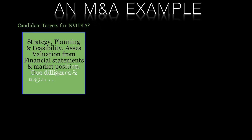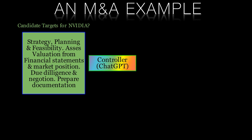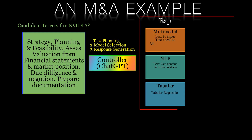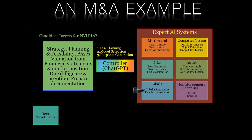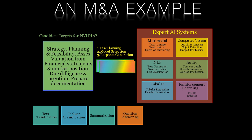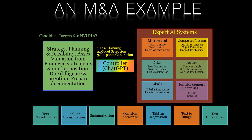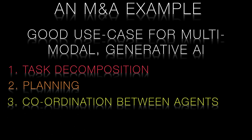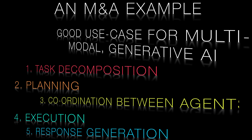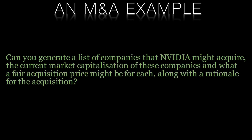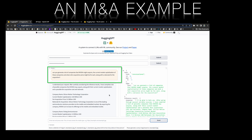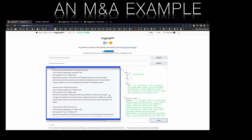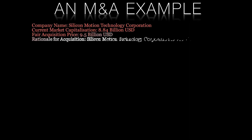Let's take a look at a simplified mergers and acquisitions workflow to see how HuggingGPT works. In this case, we will play the role of an investment banking M&A team with NVIDIA as our client. We'll be continuously monitoring the market to determine which firms might be suitable acquisition targets for NVIDIA. This is an example for which multimodal generative AI is well suited — there's a need for task decomposition and planning, complex coordination between various expert AI agents, and execution and response generation. We'll submit the following task to HuggingGPT: can you generate a list of companies that NVIDIA might acquire, what a fair acquisition price might be for each, along with a rationale for the acquisition? HuggingGPT was able to understand the request, formulate the plan, assemble the appropriate AI experts, and come up with the response you see on your screen.